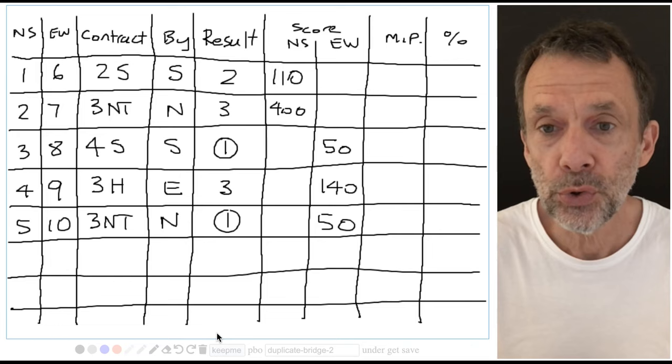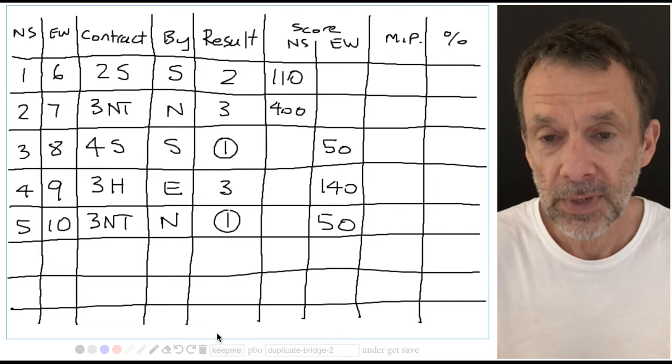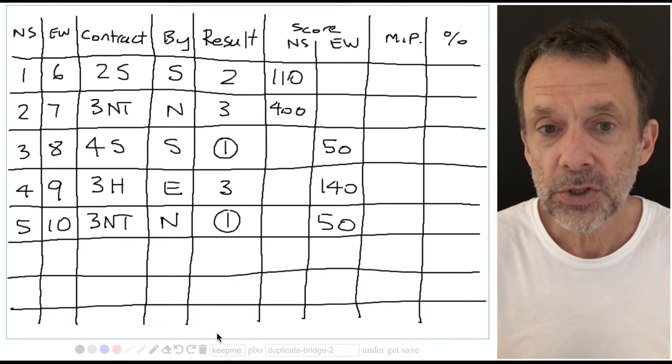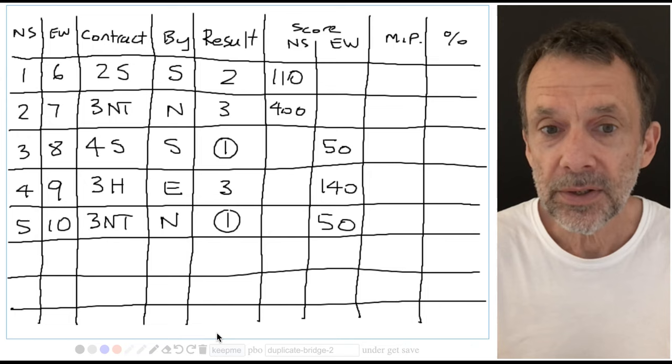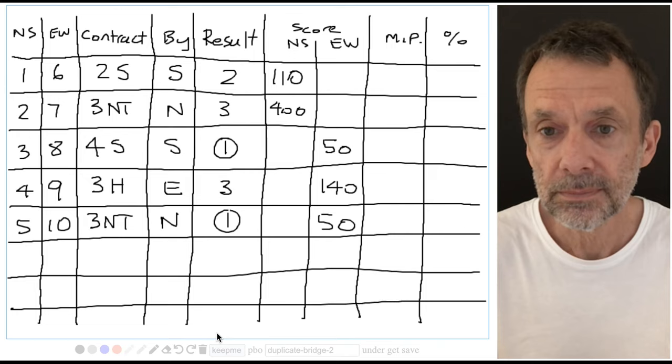Each north-south pair wins two match points for every other pair that they beat, and one match point for every other pair that they tie with. So have a look at line one. 110, how many other north-south pairs did pair one beat?